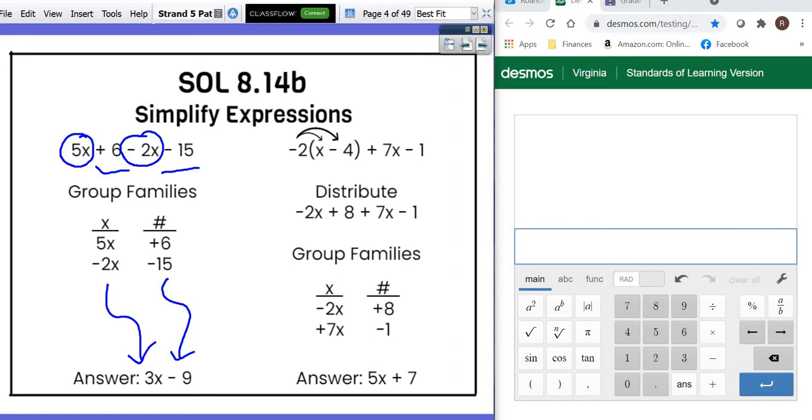The big thing is, you cannot leave a sign out. If that 5x at the beginning had been a negative, you have to take the negative with it. You can't leave it out.